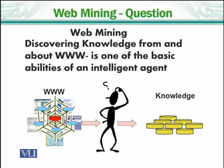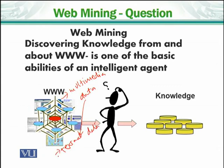This is one of the basic abilities of an intelligent agent. If you want to create an intelligent agent or a program for a computer, we will say that the WWW contains different data, which I will explain. This data is called multimedia data. What does multimedia data mean? Web data can be textual data — for example, our newspapers are written in text. There is also audio data on the internet, like audio recordings.